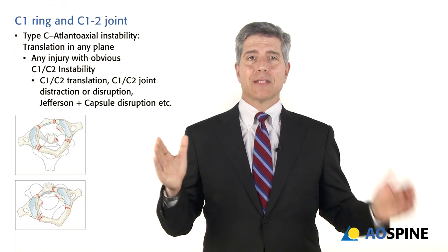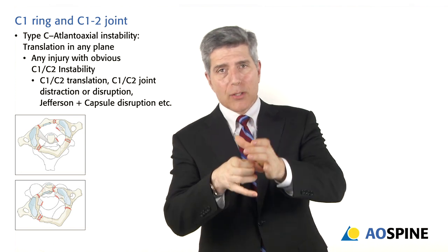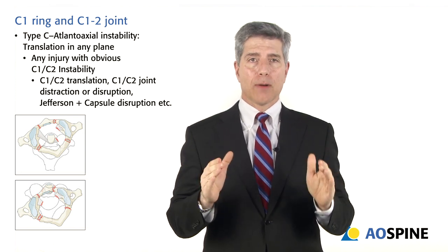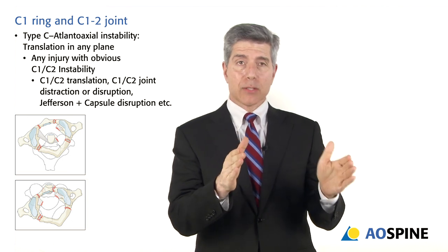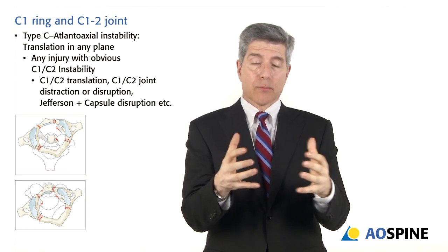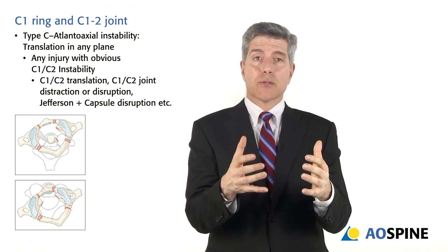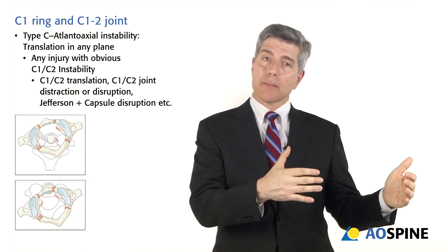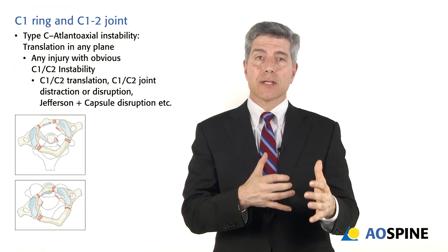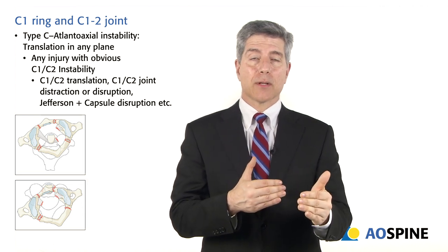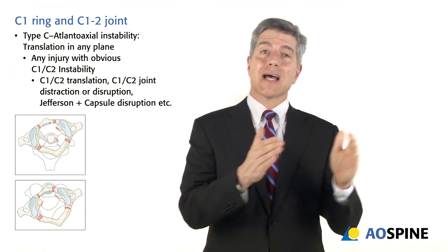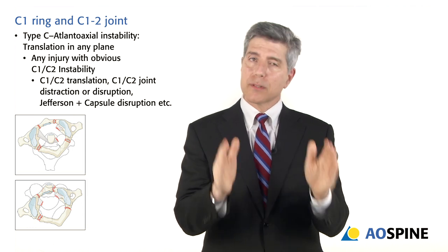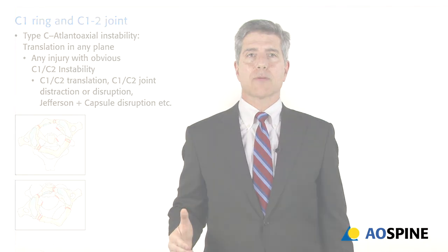Type C for category two is when you have rotation or displacement — then you know you have a problem. Keep in mind, some injuries will be type B transverse ligamentous disruption. You may put the patient in a collar or halo, and at the end of non-operative treatment, flexion-extension views may reveal significant instability. That's unstable, but in the meantime it may not manifest as type C — so you still call it type B.